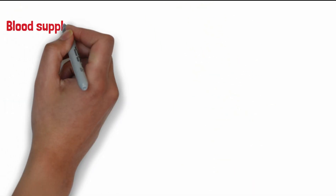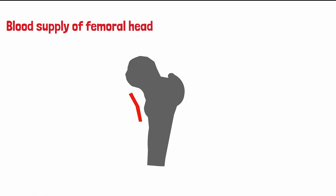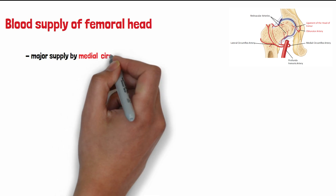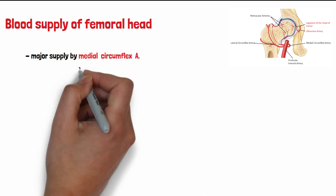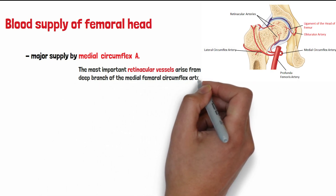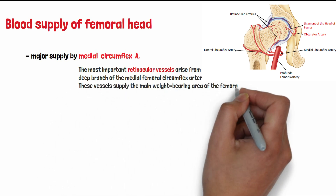The blood supply of the femoral head is mainly from the femoral artery and the obturator artery. The femoral artery gives two branches: the lateral circumflex artery and the medial circumflex artery. These two branches divide and form different retinacular arteries. The medial circumflex artery forms the posterior and superior retinacular arteries, while the lateral circumflex artery supplies the rest. The major supply to the femoral head is by the medial circumflex artery, whose most important retinacular vessels arise from its deep branches and supply the main weight-bearing area.